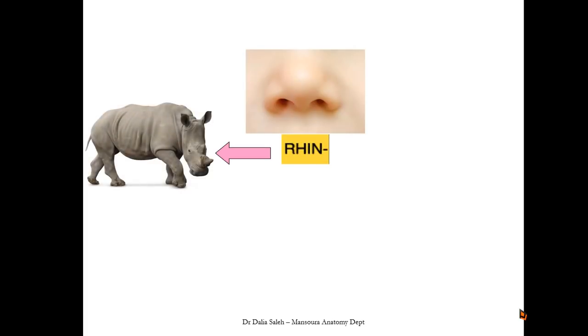For example, we have the nose here, but in Latin it's called rhin. If you add the suffix ceros, we will end up with the rhinoceros. And if you split these words into its components, rhin means nose, ceros means horn, and o is the connecting vowel. So we have rhinoceros.